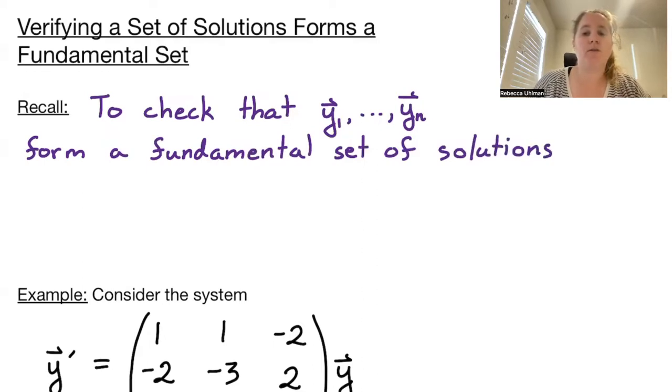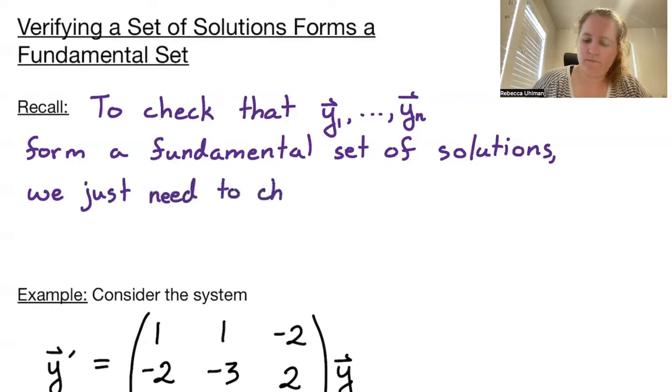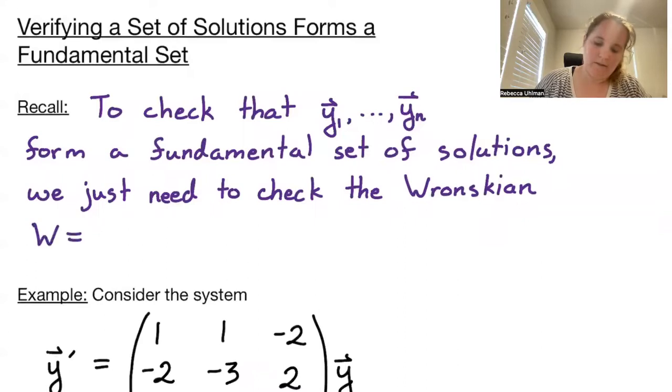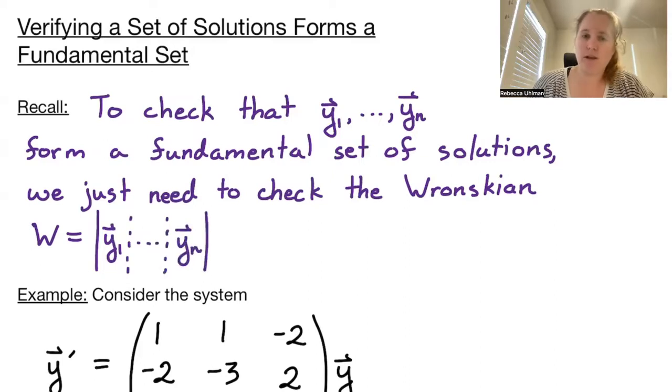All we need to do is check that the Wronskian, which is the determinant of the matrix where each column is one of our solution vectors, so the matrix with first column Y1 through last column Yn, the determinant of that matrix is non-zero somewhere.